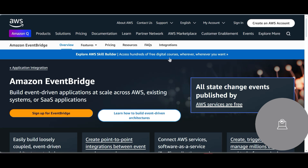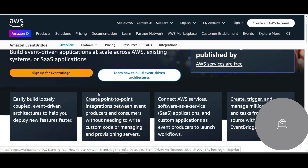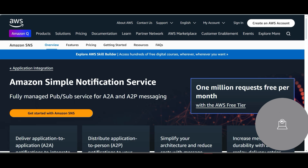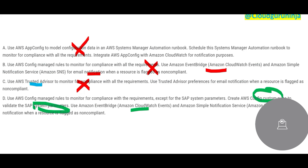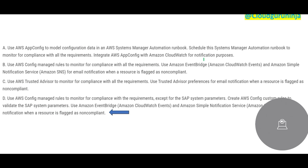For SAP system parameters, you create Config custom rules. Then, for event-driven alerts, you use EventBridge. To send automated alerts — emails, push notifications, anything — you use SNS, which is a fully managed pub/sub service for A2A and A2P messaging. Alerts are sent only when a resource is flagged as non-compliant. If everything is compliant, you don't burden the monitoring team with unnecessary notifications.